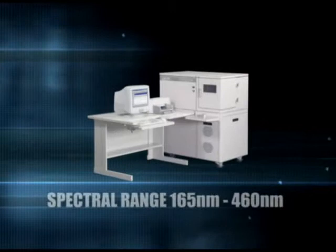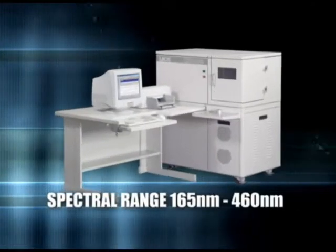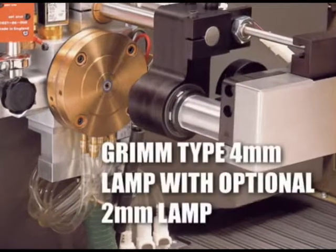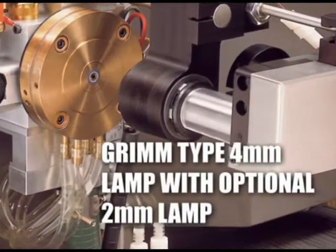The GDS500 spectrometer features a spectral range of 165 to 460 nanometers. Featuring a standard 4-millimeter target area with an optional 2-millimeter target lamp, the Leco GDS500 can accept a wide range of sample materials.